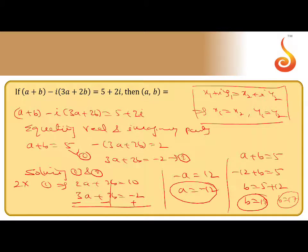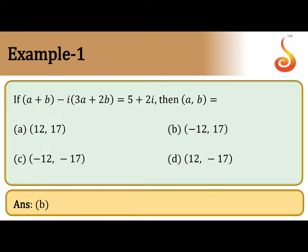Let us check the answer. We have a equal to minus 12 and b equal to 17. So a equal to minus 12 and b equal to 17 is the right answer.